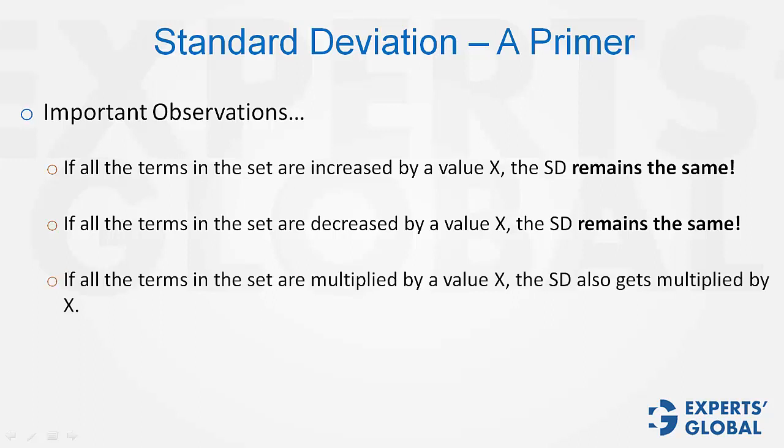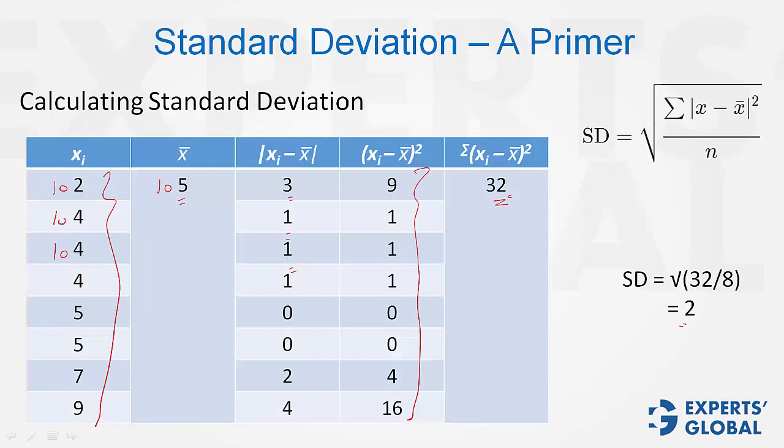However, if each term in the set is multiplied by the same value x, the standard deviation also gets multiplied by x. Imagine, if all the terms were doubled, 4 would become 8, 5 would become 10. This 5 would also become 10, and see,